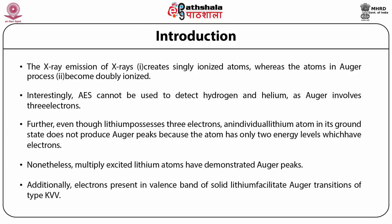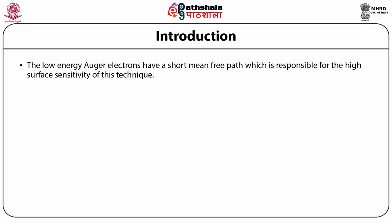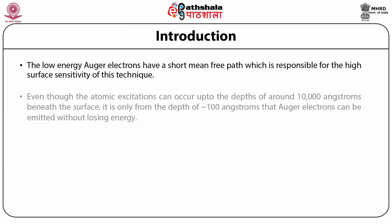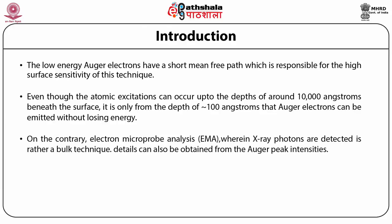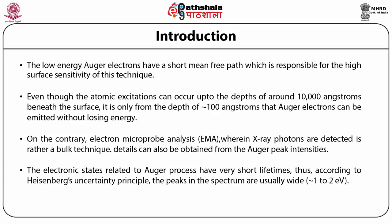Additionally, electrons present in the valence band of solid lithium facilitate Auger transitions of type KVV. The mean free path is responsible for the high surface sensitivity of this technique. Even though atomic excitation can occur up to depths of around 10,000 Angstrom beneath the surface, it is only from a depth of approximately 100 Angstrom that Auger electrons can be emitted without losing energy. Electronic states related to the Auger process have very short lifetimes. Thus, according to Heisenberg's uncertainty principle, the peaks in the spectrum are usually wide, between 1 to 2 electron volts.